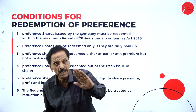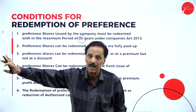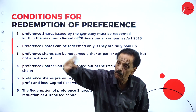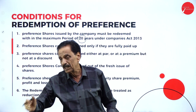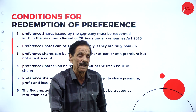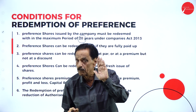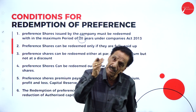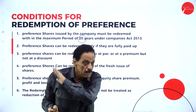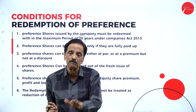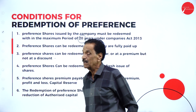Third condition: preference shares can be redeemed either at par or at a premium, but not at a discount. A 100-rupee share can be paid back at 100 rupees (at par) or at 105 rupees (at premium), but it cannot be paid back at 95 rupees — that would be a discount, which is not allowed.